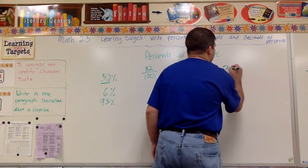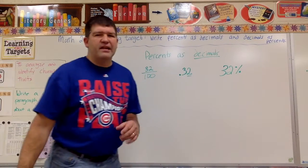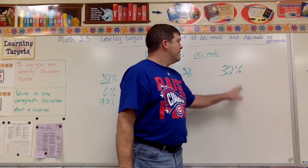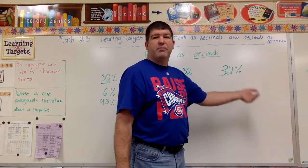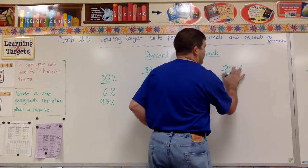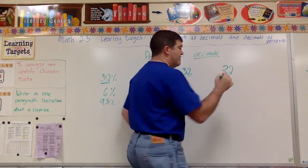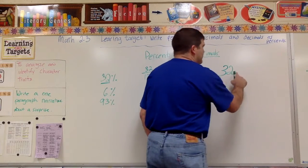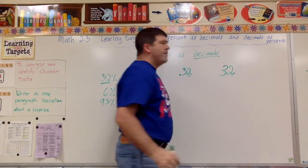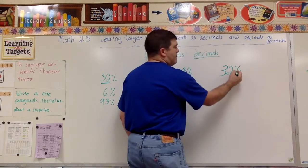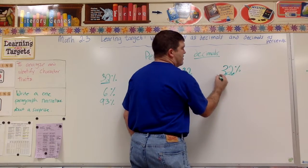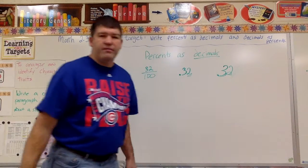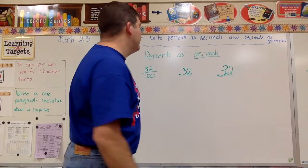Here's a little trick: with 32 percent, I see two dots in the percent symbol. If I want to remove the percent sign and get a decimal, I start from where the decimal point would be — there's always a decimal there — and I move it one, two places to the left, and the percent sign is gone. So 32 percent becomes 0.32.